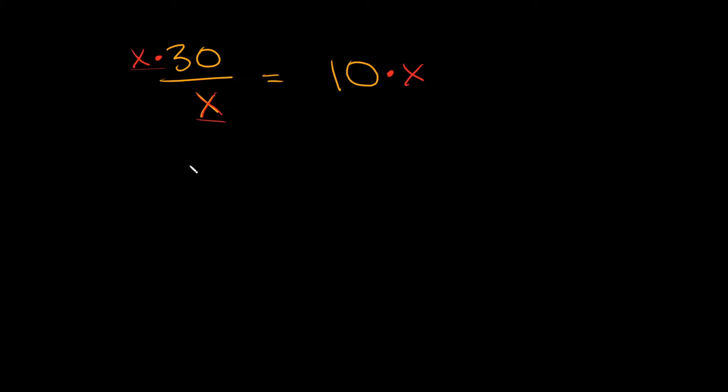So now you're gonna see a couple things happen. Whenever you have the same number or the same variable on the top and the bottom, they cancel out. So this x and this x cancel out. On this side of the equation all we're left with is 30.